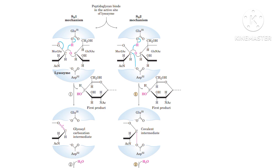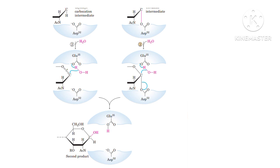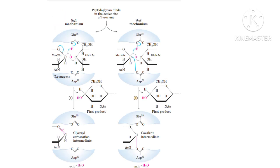In the second step, water acts as a nucleophile and attacks carbon number one of NAM, because carbon number one of NAM is positively charged and the oxygen of water is a negative region — so water behaves as a nucleophile. When water attacks carbon number one of NAM, at that point carbon number one of NAM is not attached with any other group on the enzyme — it is free. When the incoming nucleophile attacks the electrophile which is not attached with any other weak nucleophile, this type of mechanism is called SN1. In this, Glutamate 35 acts as a general acid in both phases.